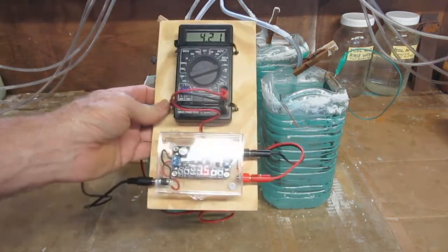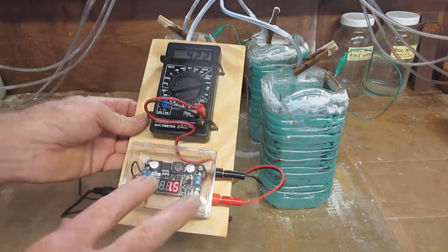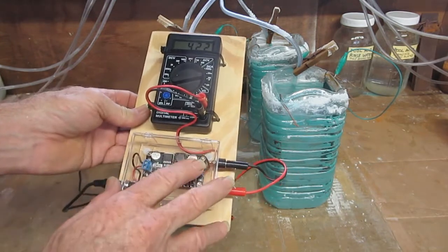This is a step-down buck converter module with a multimeter, and the circuit board is inside this plastic box.